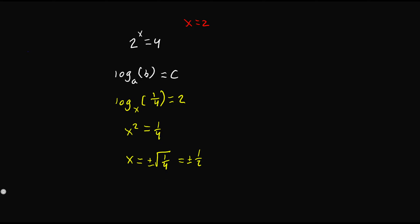Simplifying gives us plus or minus 1/2. So now we go ahead and verify by looking at both solutions. We test log base 1/2 of 1/4 is equal to 2. We can write log base 1/2 of (1/2)² which is the same thing as 1/4, giving us 2 times log base 1/2 of 1/2, which equals 1, so we have 2 times 1 which is equal to 2 — which is true.